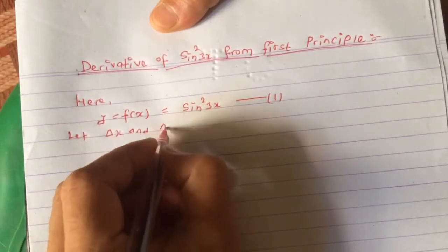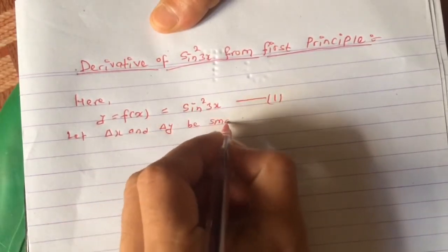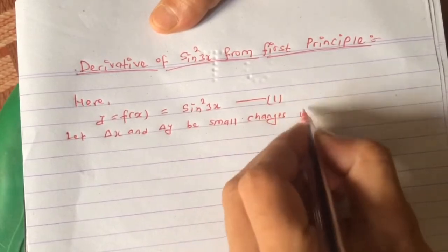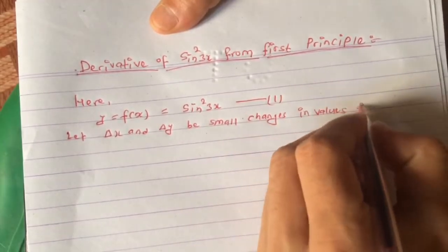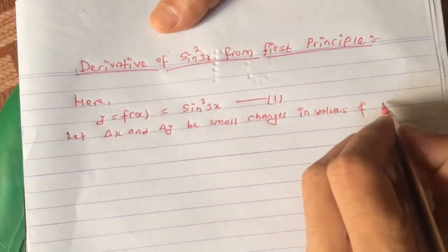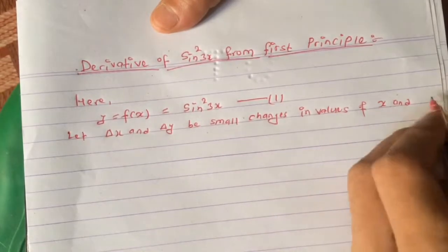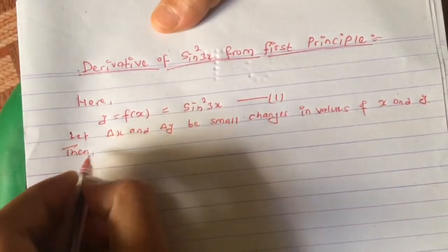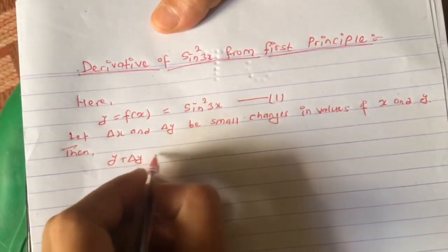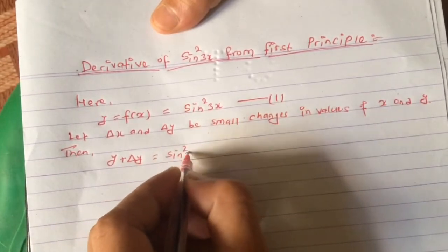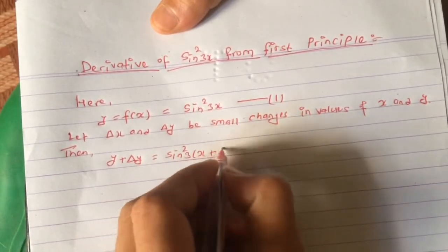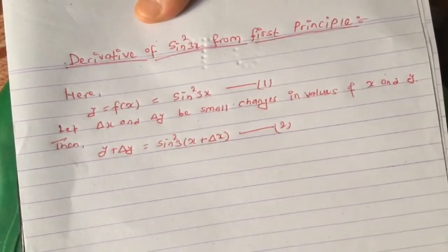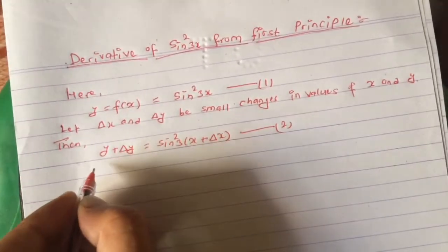Let Δx and Δy be small increments in the value of x and y. Then y + Δy = sin²(3(x + Δx)). Let this be equation 2.